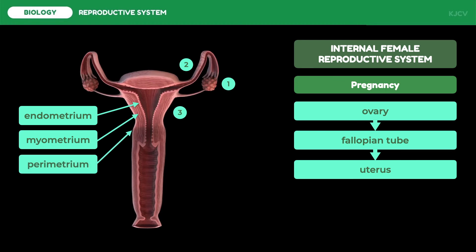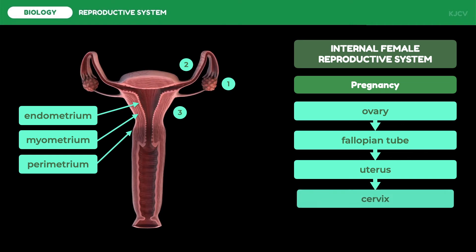The perimetrium provides support to the entire organ. At the lower portion of the uterus is the cervix. The cervix expands once the baby is ready to be born. Cervical mucus is produced by this organ, which facilitates the transport and nourishment of the sperm to aid in fertilization. It also plays a role in hormonal signaling and can be used as an indicator of a woman's fertility.